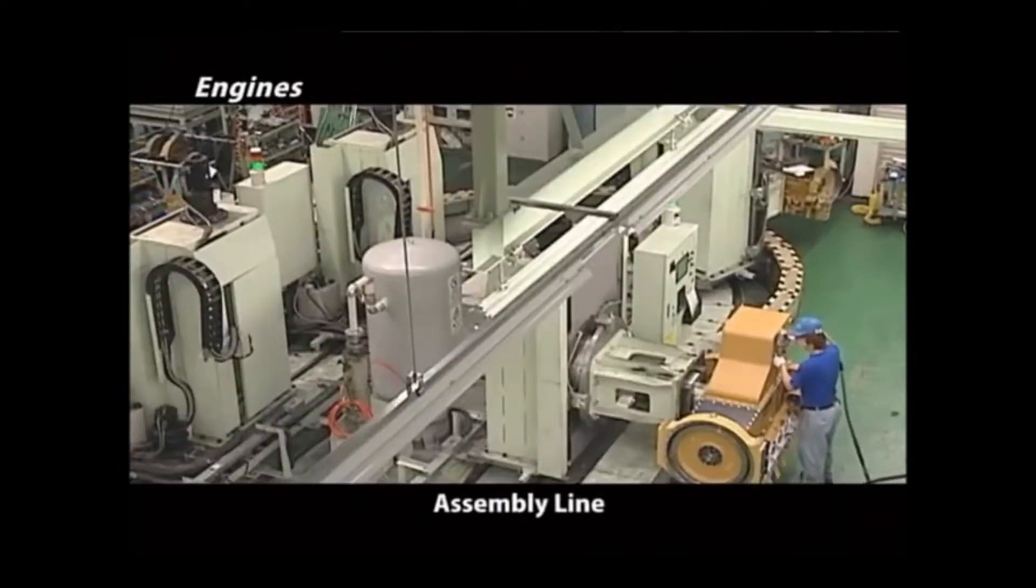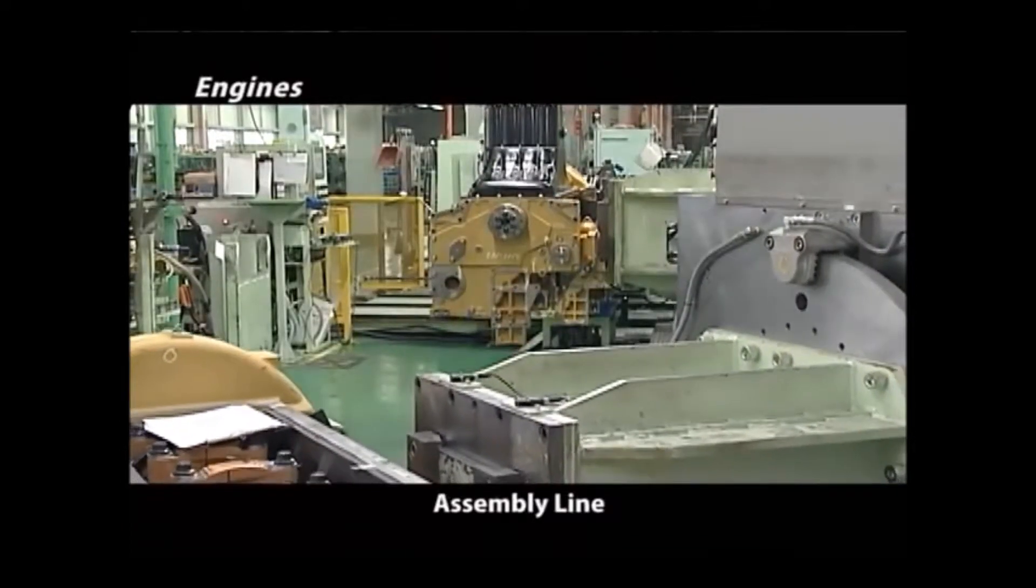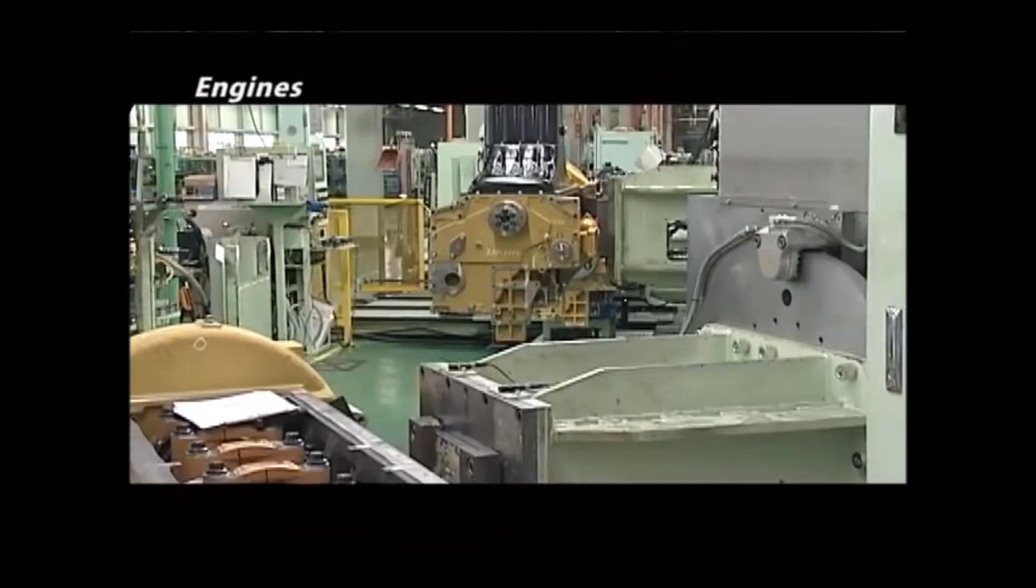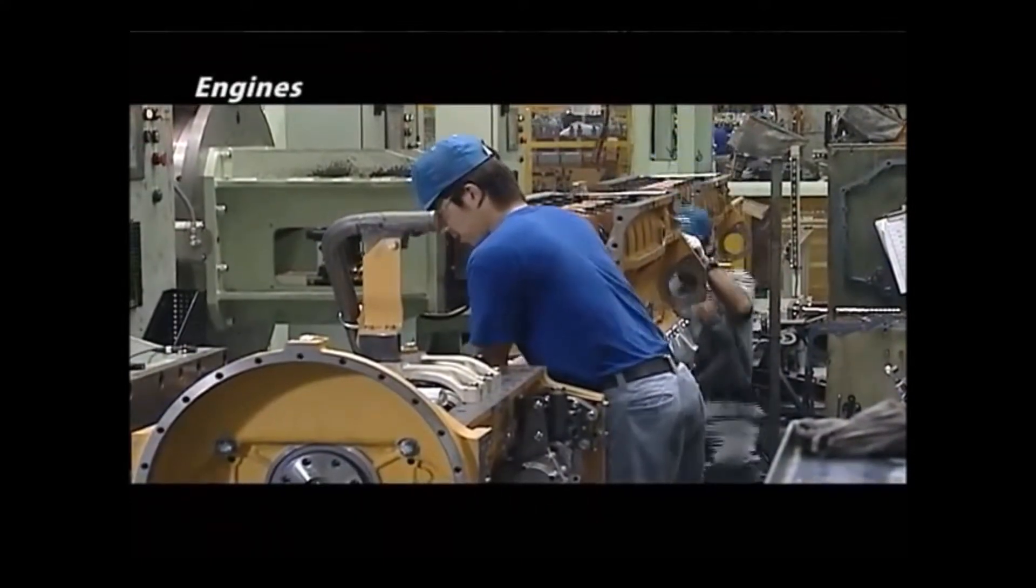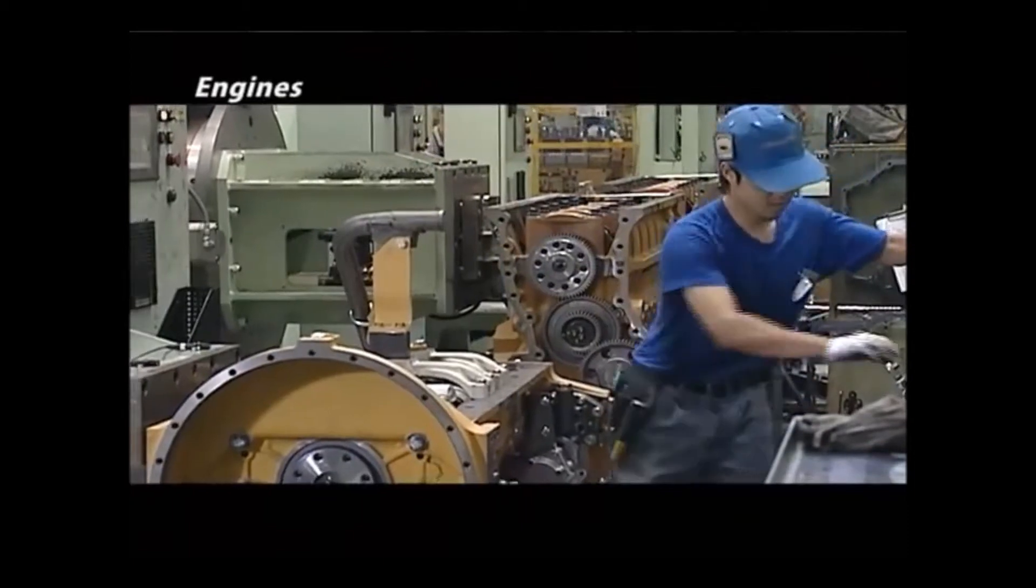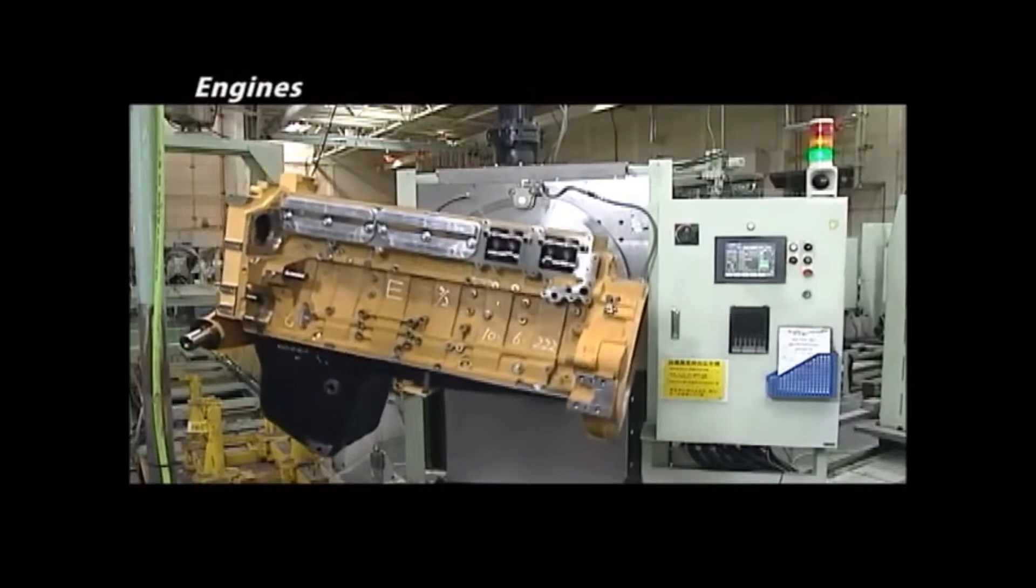The assembly line has a mechanism to hold the cylinder blocks which adjusts the height of a block according to the process. It moves cylinder blocks up and down, making work much easier. Creating a good working environment is essential to building top quality engines.